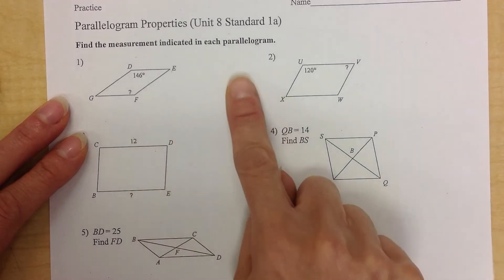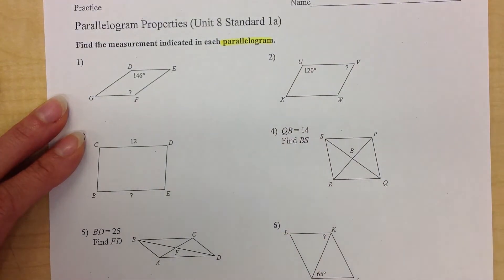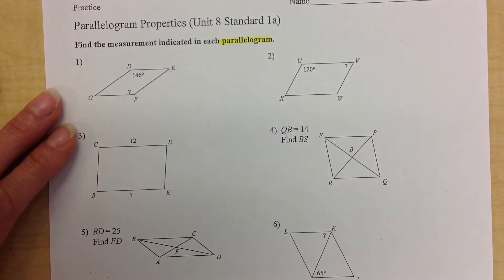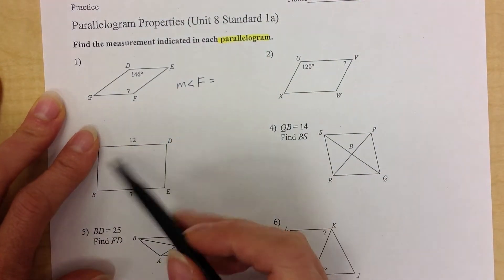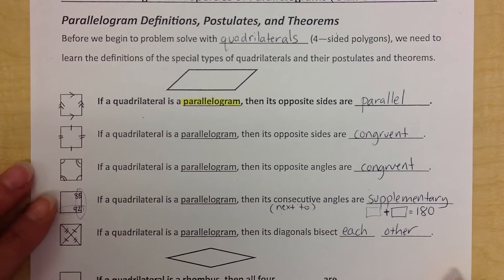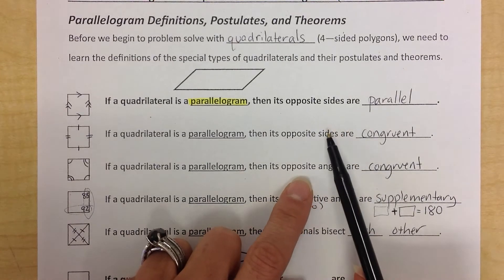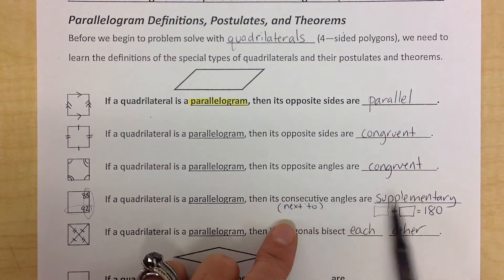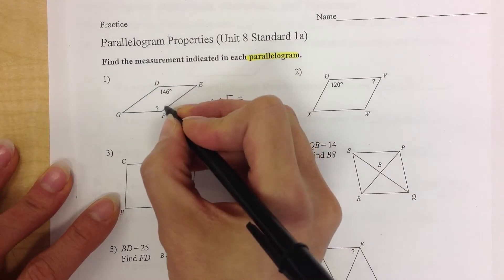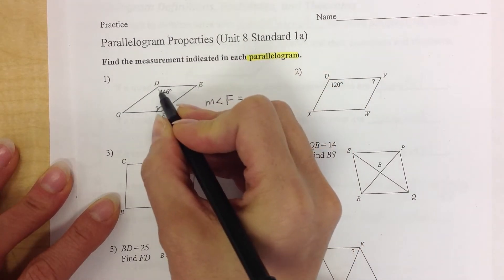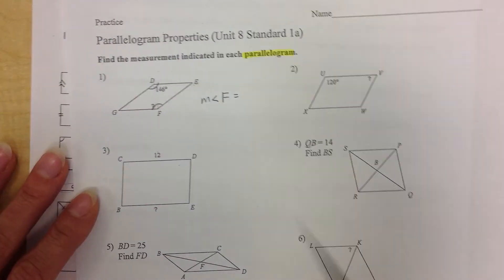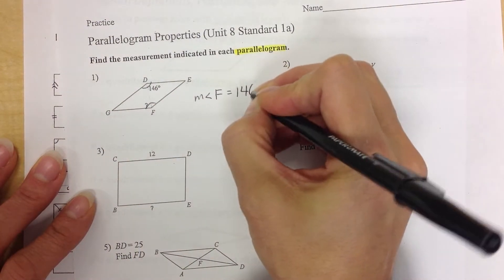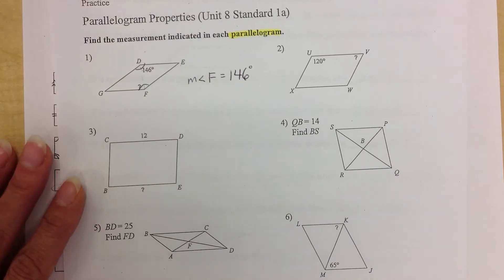How do I use these properties? If I'm told it's a parallelogram, I have to have those properties memorized. When I'm problem solving, I'm going to look at what information they gave me. Here, they're asking me for the measurement of angle F. I'm looking for an angle, so I'm recalling: opposite angles are congruent, and consecutive angles are supplementary. I want this angle and I have this angle — and this angle is the opposite angle. So what do I know about opposite angles? That they are congruent. So if this is 146, then angle F is also 146.